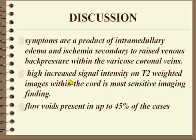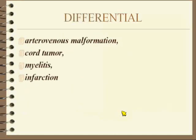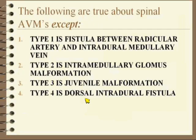The symptoms are intramedullary ischemia and edema due to raised venous pressure and back pressure. You don't have to have flow voids, but it's nice when you see them. The differential is broad — a variety of vascular malformations. Anytime you see big vessels, consider whether there's a tumor feeding them. Myelitis is unusual to have big vessels associated with it, and infarction would lack vessels — no big flow voids.